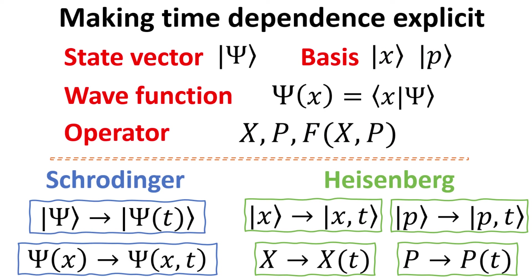Let's begin with our key quantities: the state vector psi, the x and p basis kets, our wave functions, and operators. In the Schrödinger picture, we assign the time dependence to the psi kets and the wave functions, while the operators are treated as time independent.